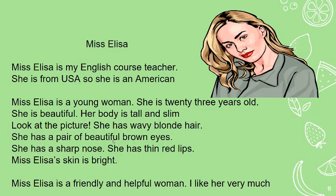Sekarang kita akan menceritakan tentang Miss Elisa. Let's have a look at this text. Miss Elisa is my English course teacher. She is from USA, so she is an American. Miss Elisa is a young woman. She is 23 years old. She is beautiful. Her body is tall and slim. She has wavy blonde hair. She has a pair of beautiful brown eyes. She has a sharp nose. She has thin red lips. Miss Elisa's skin is bright. Miss Elisa is a friendly and helpful woman. I like her very much.